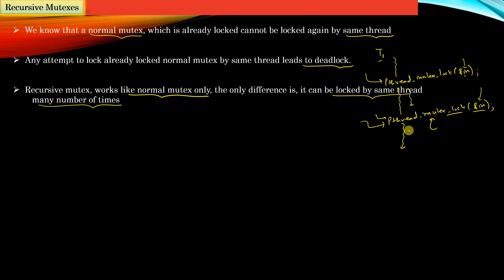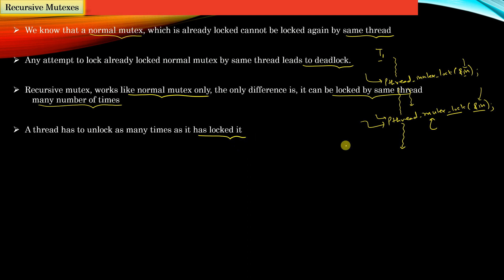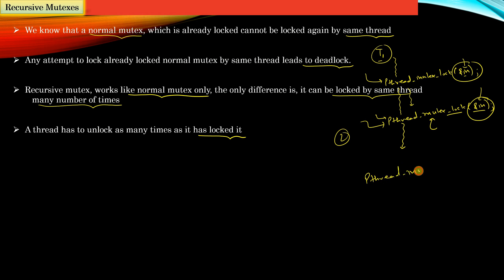Remember, a thread has to unlock the recursive mutex as many times as it has locked it. In order to release the mutex completely, the thread must invoke pthread_mutex_unlock the same number of times it locked it. In this example, thread T1 locked the recursive mutex two times, so it must call pthread_mutex_unlock on it two times to release it completely.